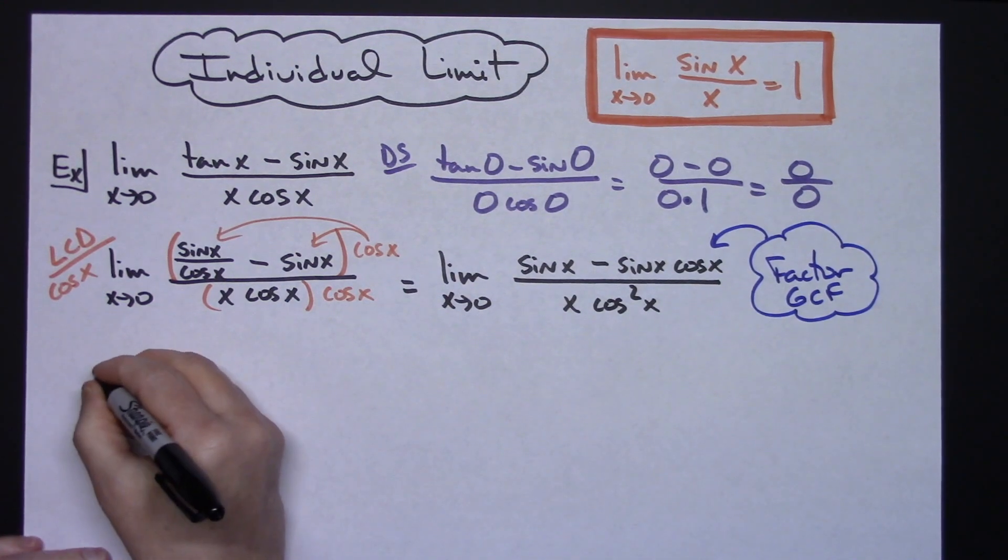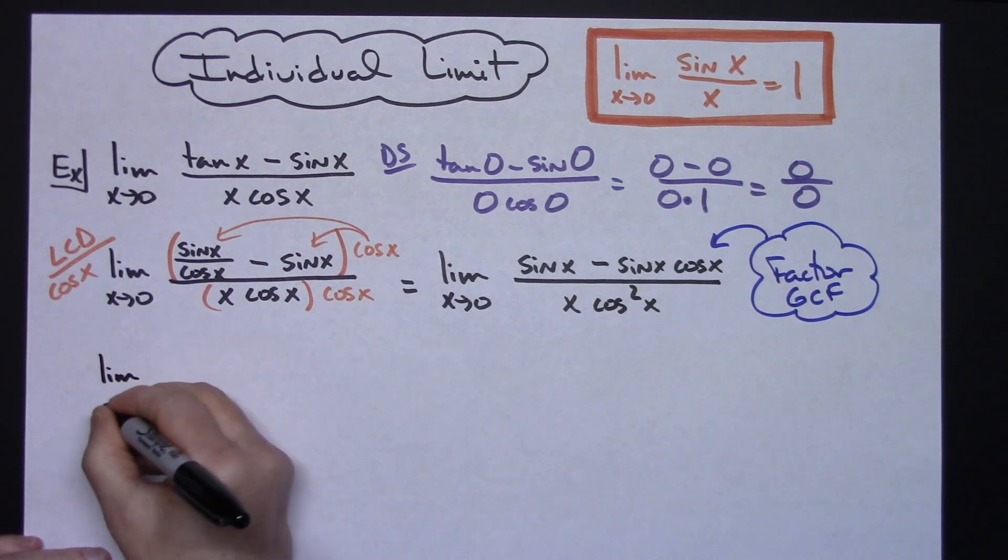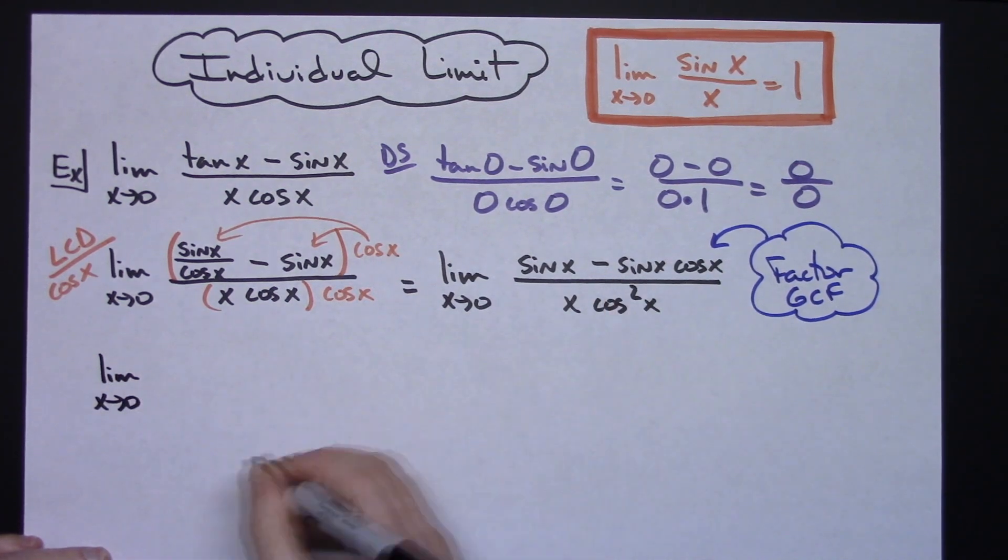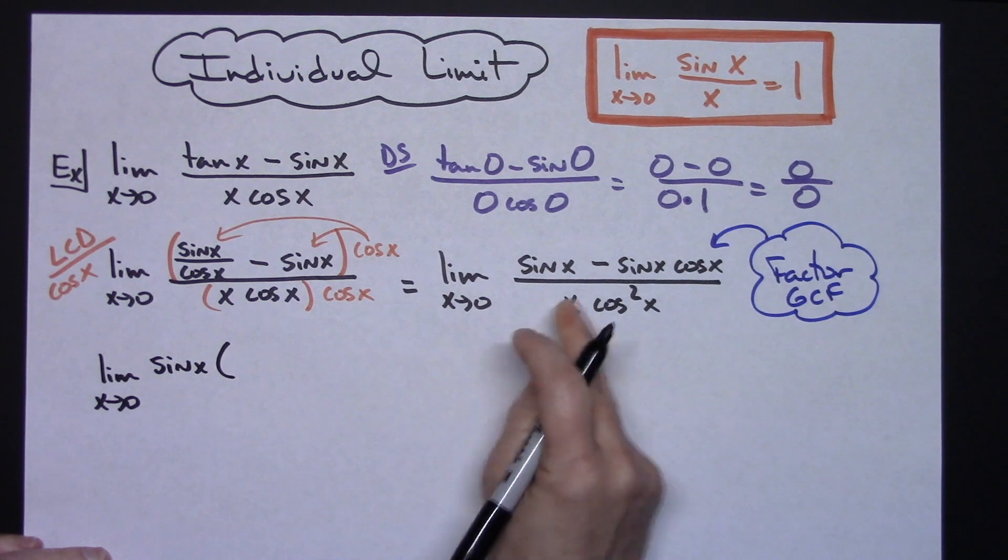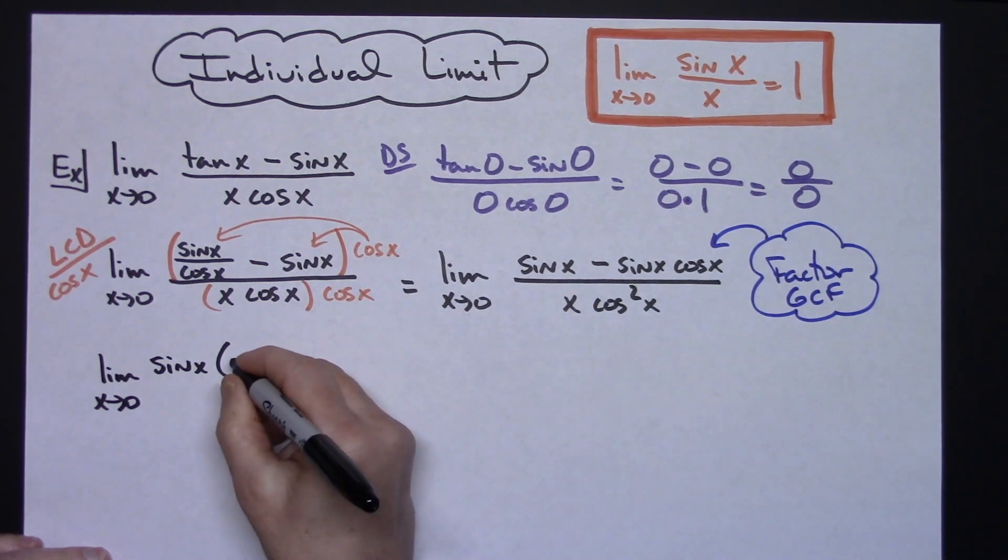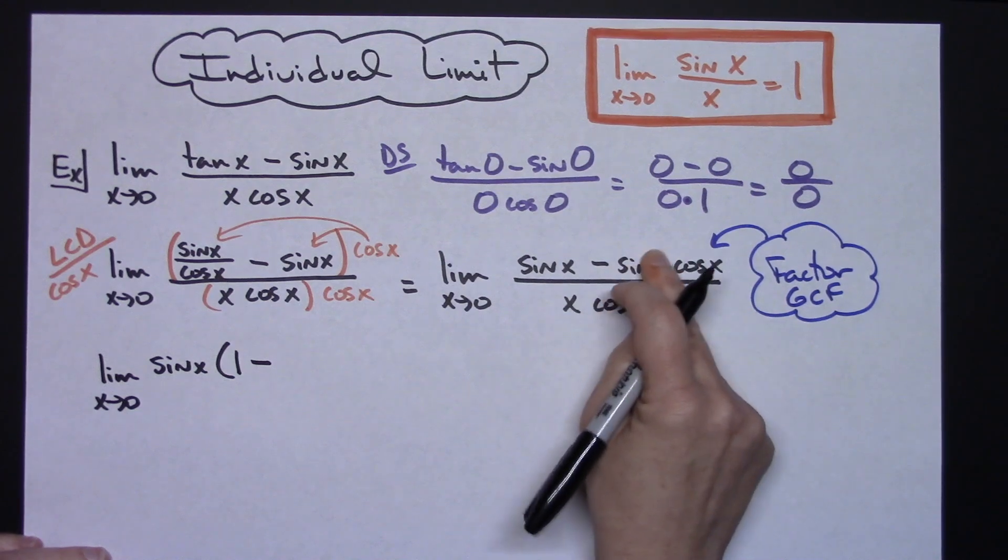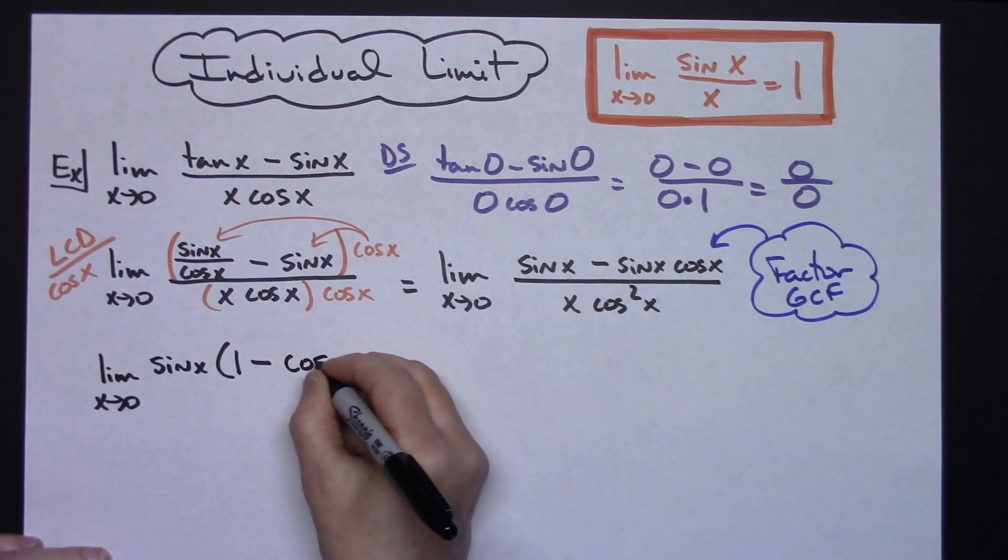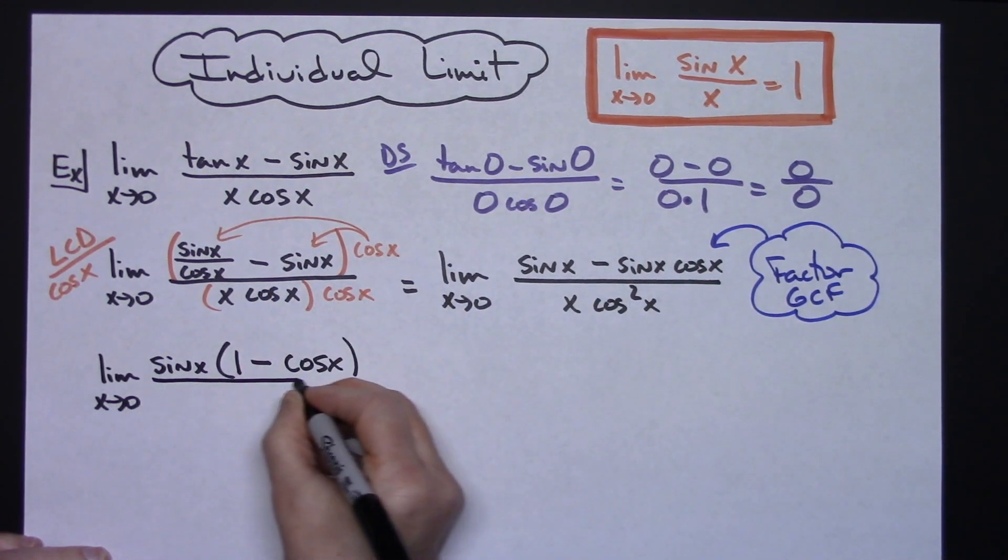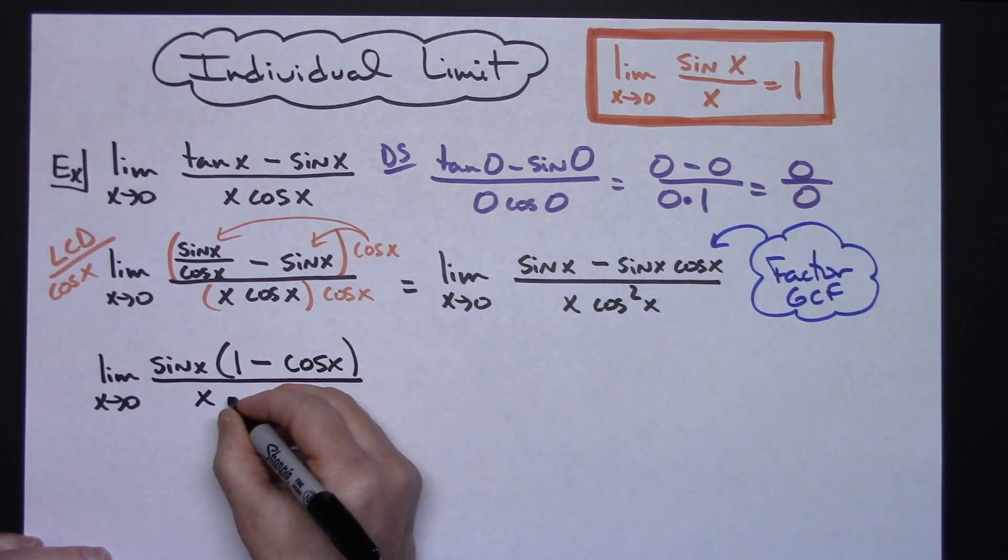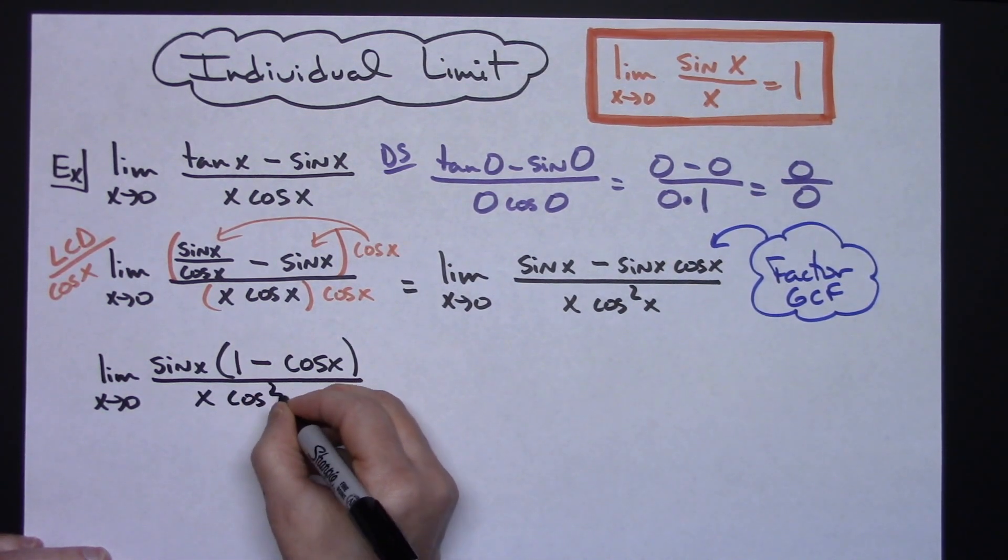In our next line we have the limit as x approaches 0, factoring out sin(x). In the first term, taking that out leaves 1. Minus, taking it out of the second term leaves cos(x), all over x cosine squared x.